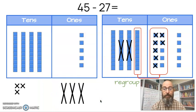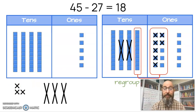Now, let's count and see what I have left. Count again by tens. Ten. Let's go to the ones. 11, 12, 13, 14, 15, 16, 17, 18. So our answer is going to be 18.